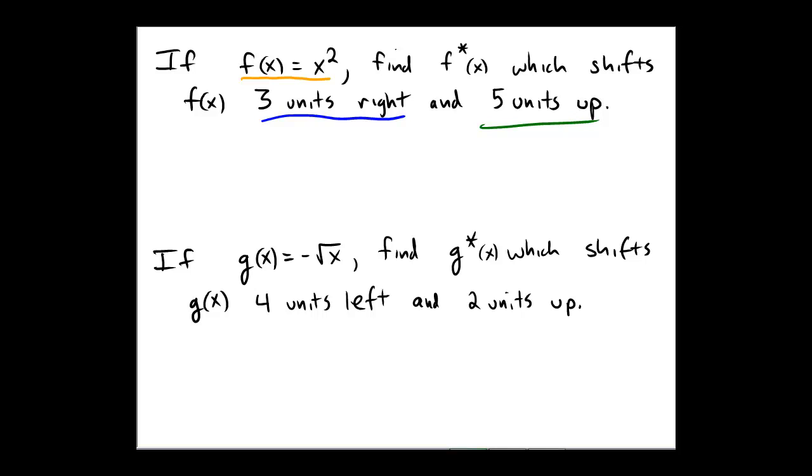So as a result of those two translations, our ending function f star of x will be x squared. But because of the right translation of 3, we're going to subtract 3. So shifting to the right means subtract 3 from x.